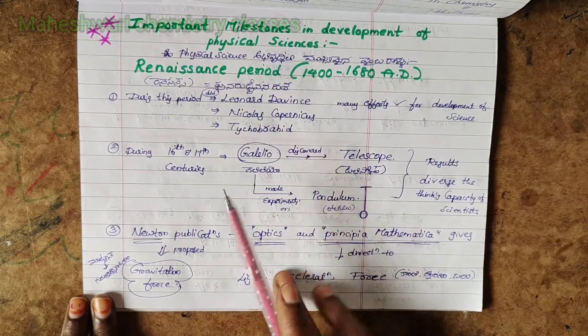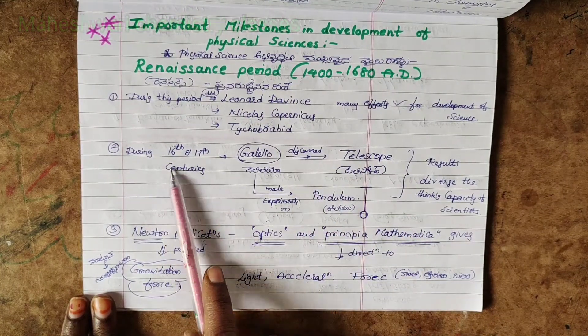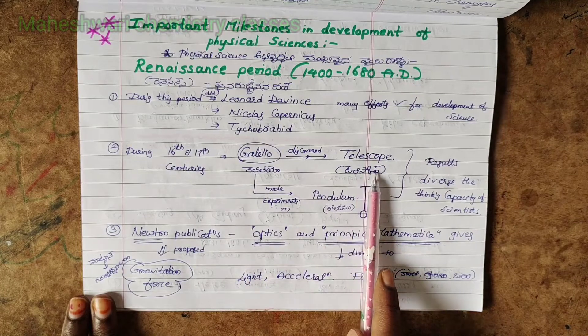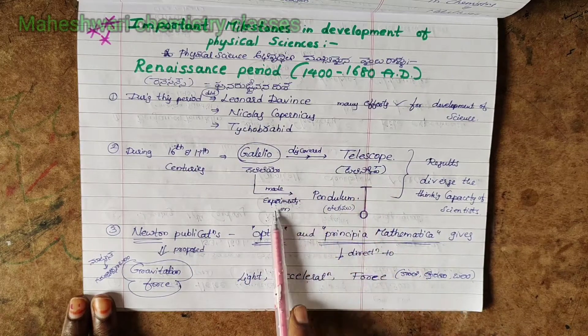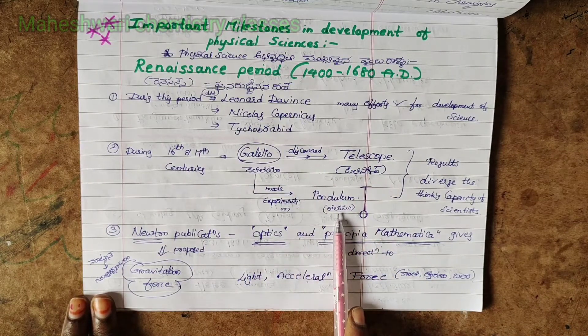Second point: During the 16th and 17th century, Galileo discovered the telescope. At the same time, Galileo also made experiments on the pendulum.